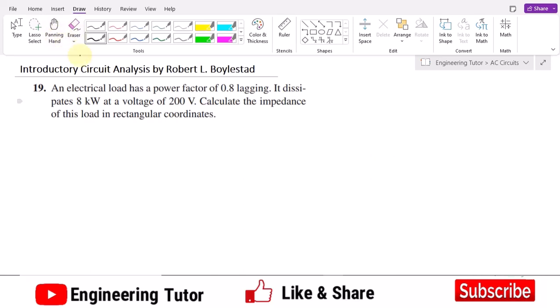That is a very interesting question. Let me depict it using a figure. So let me have a figure here in which we have this load. What is the applied voltage here? The applied voltage is 200 volts, and the power which dissipates across this load is 8 kilowatts.